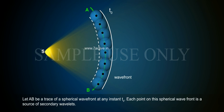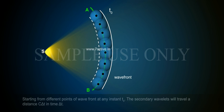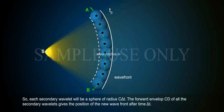Each point on this spherical wavefront is a source of secondary wavelets. Starting from different points of wavefront at any instant t0, the secondary wavelets will travel a distance cΔt in time Δt. The forward envelope CD of all the secondary wavelets gives the position of the new wavefront after time Δt.